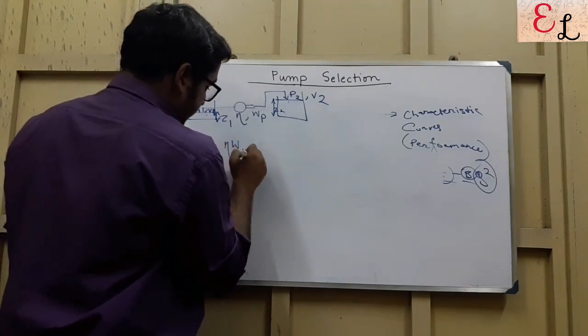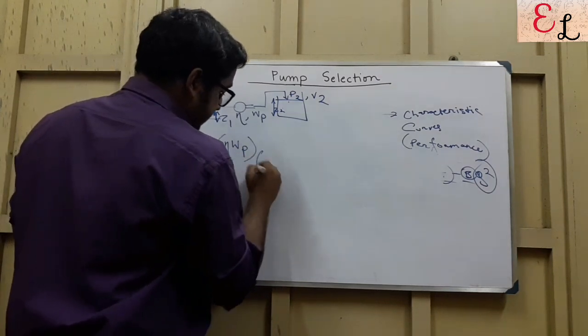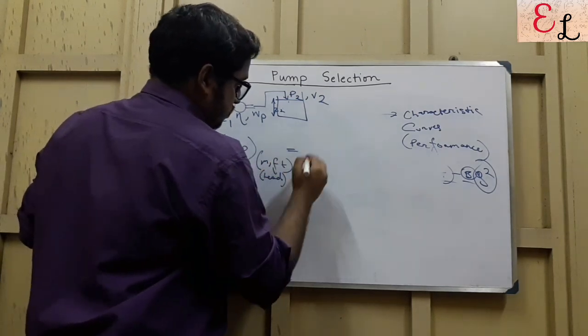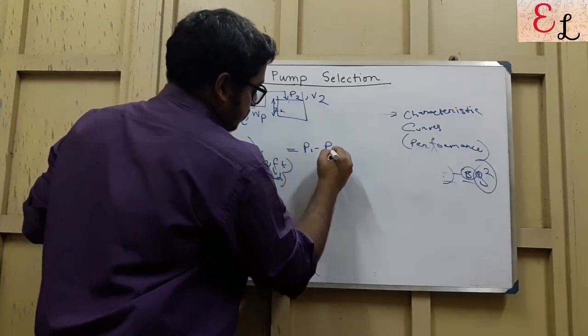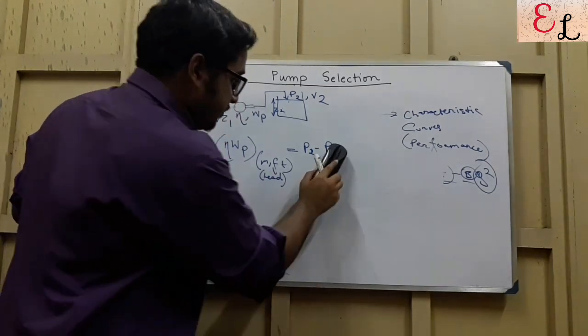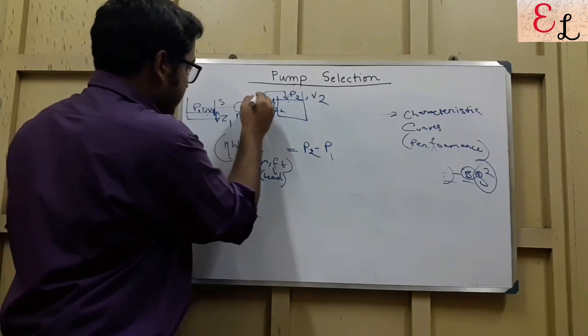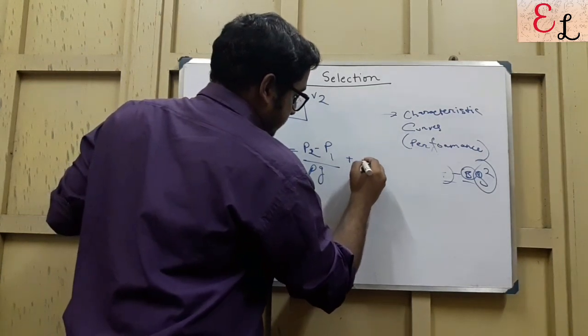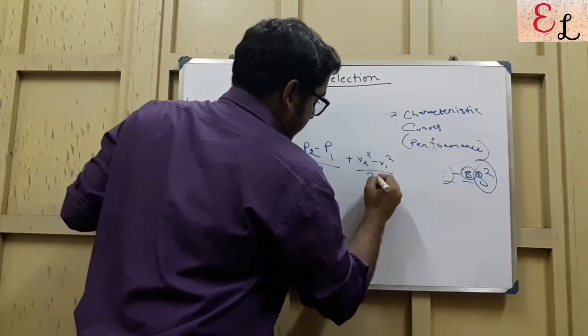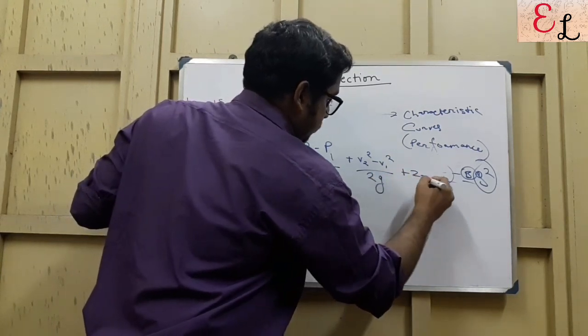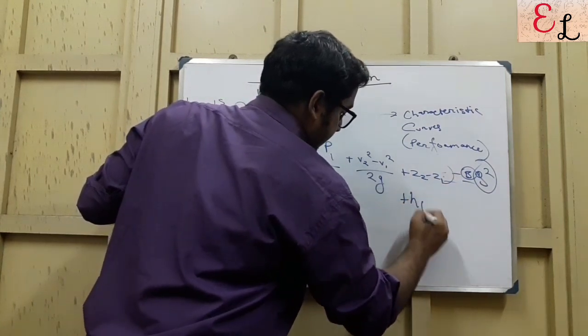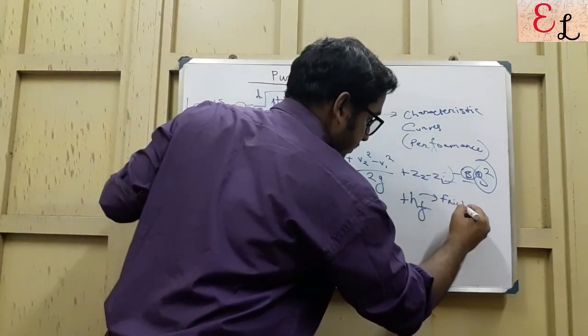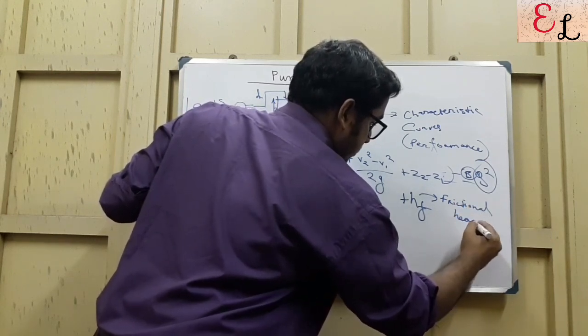Eta WP, taken as the head, that is in meters or feet as the head, is equals to P2 minus P1, the discharge pressure minus the suction pressure, by rho G, plus V2 square minus V1 square by 2G, plus Z2 minus Z1, plus HF, where HF is the frictional head loss.